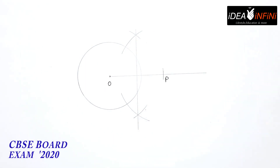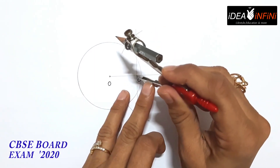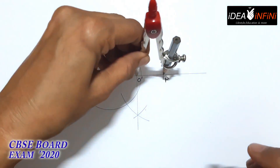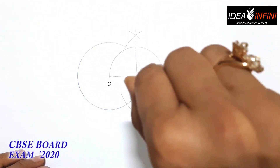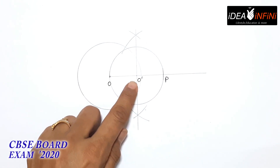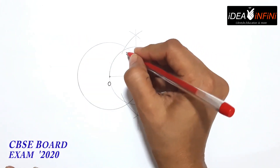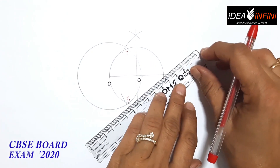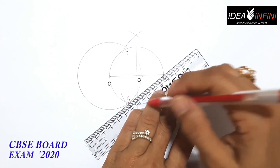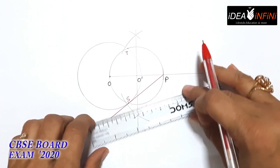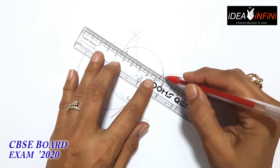P से circle पर 2 tangents बनाने के लिए OP का perpendicular bisector बनाना है। OP के आधे से ज्यादा का distance लीजे — एक ऊपर और एक नीचे arc cut करिए from P, same radius maintain करते हुए O से भी arcs cut करिए। दोनों arcs कट हो गए — आपका perpendicular bisector of OP मिल गया। इसका center O dash है — O dash O radius लेकर एक circle बनाना है जो पुराने circle को दो जगह intersect करे। Intersecting points हैं T और S।